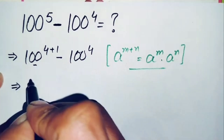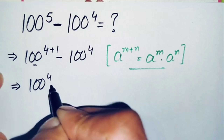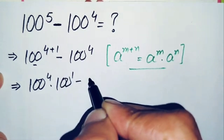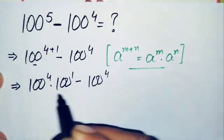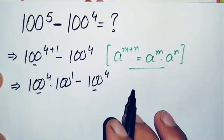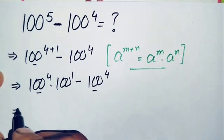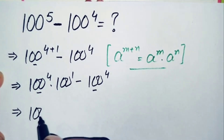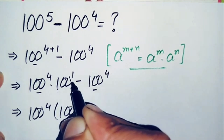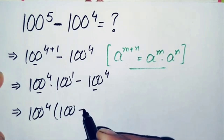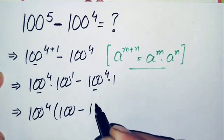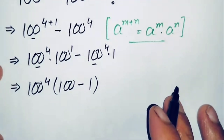Using this exponential math property, this equation will become 100 raised to the power 4 times 100 raised to the power 1, minus 100 raised to the power 4. Here in both terms, 100 to the power 4 is common, so we take it out as a common factor. This becomes 100 raised to the power 4 times the quantity 100 raised to the power 1 — which is simply 100 — minus 1.